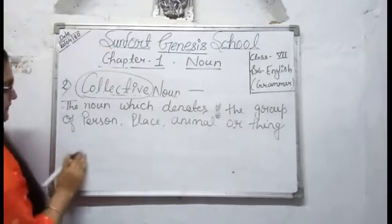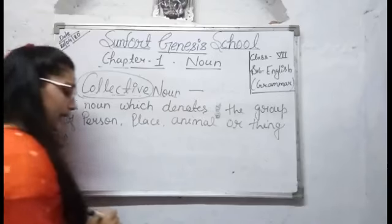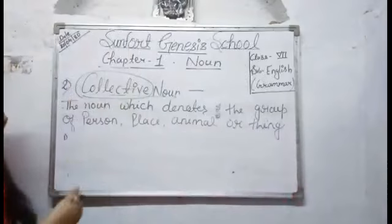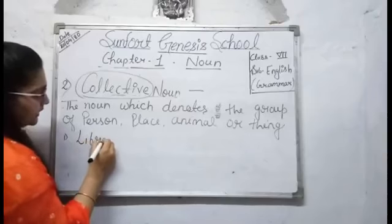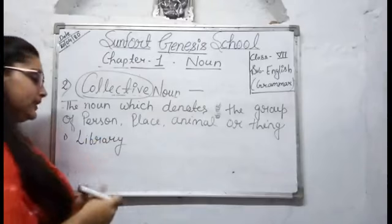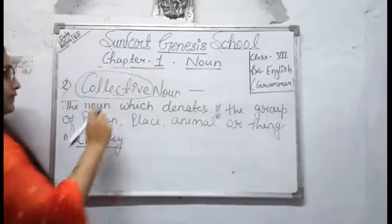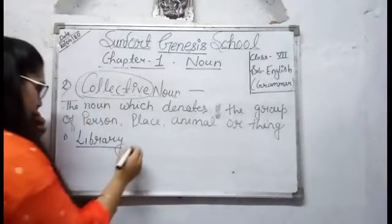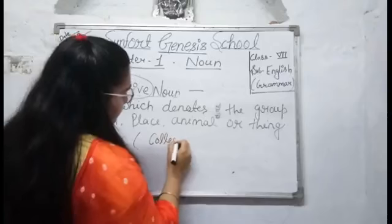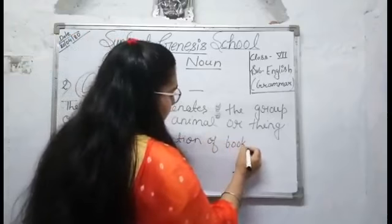We can take the example: now tell me, what can we call that place where we collect books? Then you will say it's a library. It's a library where we collect books. So library is a kind of collective noun — collection of books.